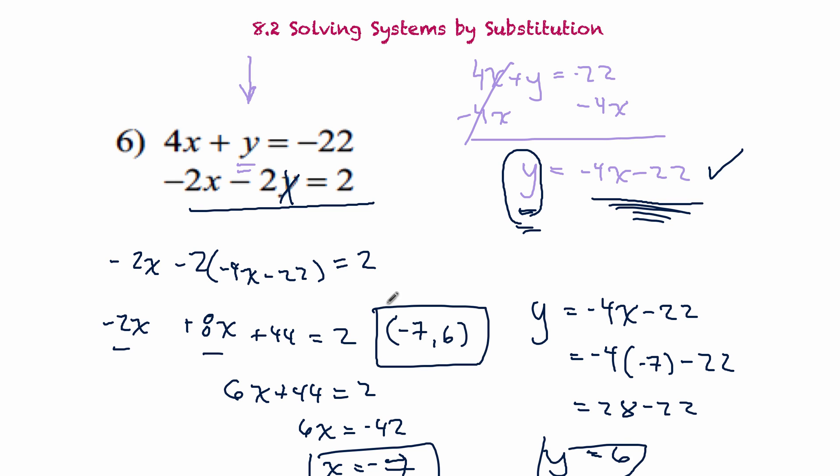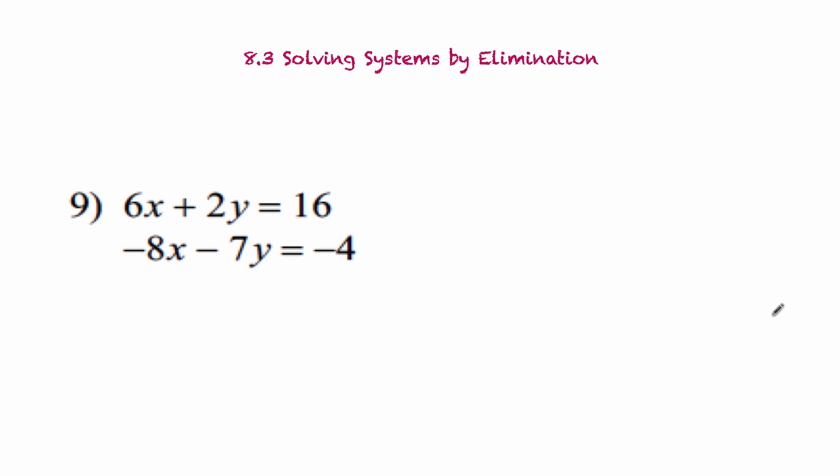Now we can go back to this equation and find what y equals. Y is going to equal negative 4 times negative 7 minus 22. We're going to get 28 minus 22 or y equals 6. So we're going to write our answer as a coordinate point: negative 7, 6. By the way, all these questions come off of the corrective assignment. You can go download that if you want. There are lots and lots of problems on there.